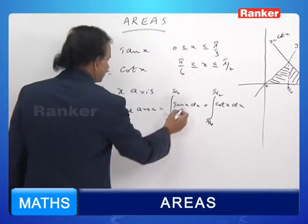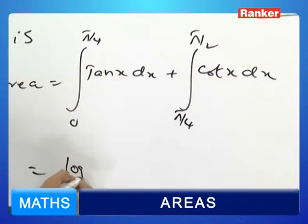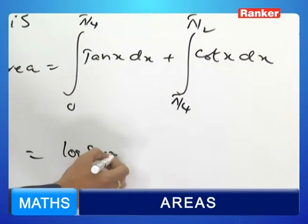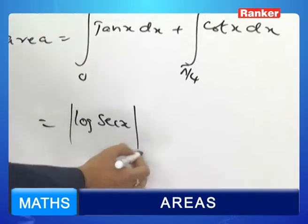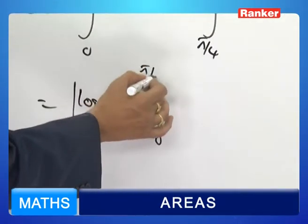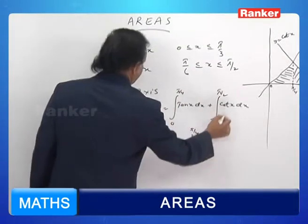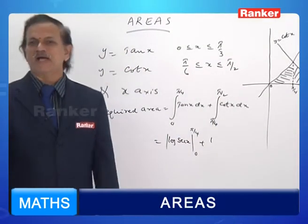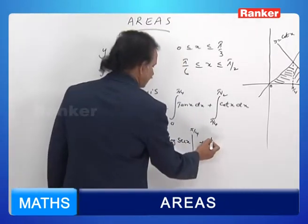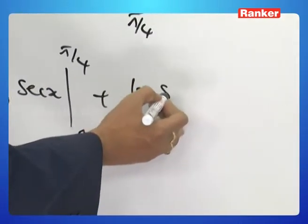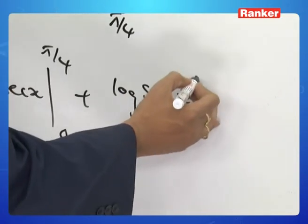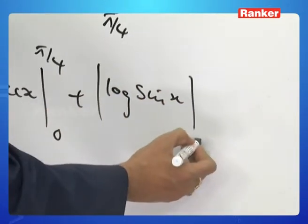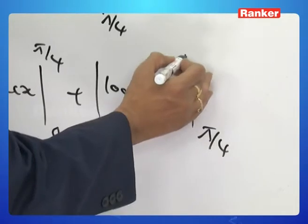What is integral of tan x? Log mod secant x to the base e between the limits 0 to pi by 4. And what is the integral of cot x? It is log mod sin x to the base e, between the limits pi by 4 to pi by 2.